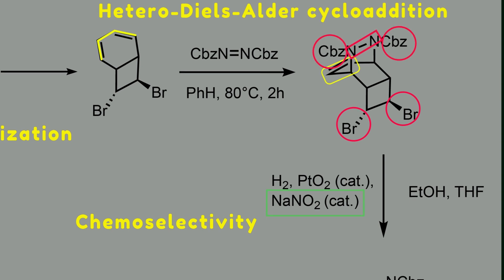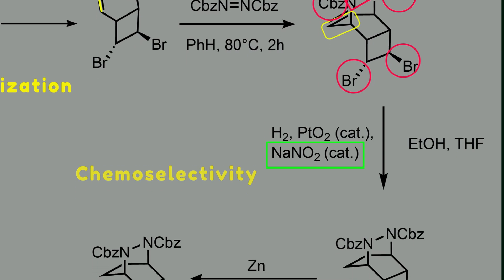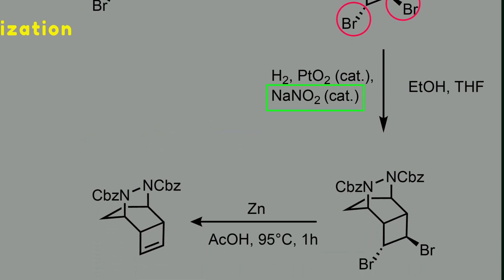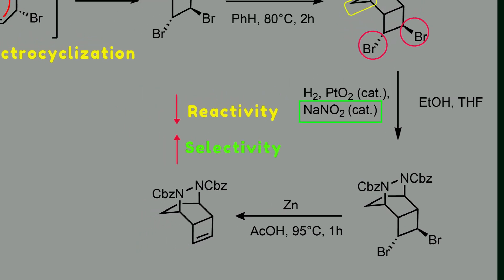The authors used sodium nitrite to get around this problem and increase chemoselectivity. Sodium nitrite contaminates the surface of platinum dioxide and modulates the reactivity of the catalyst, which leads to higher selectivity. Reductive debromination of this compound mediated by zinc powder in hot acetic acid completed the synthesis of the cyclobutene system.